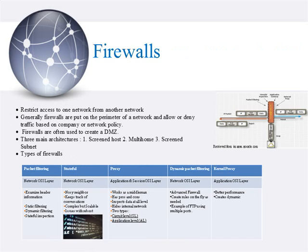Next topic, firewalls. Firewalls are used to restrict access to one network from another — they prevent specific types of information from moving between the outside world and the inside trusted network. There are three main architectures: screened host, multi-home, and screened subnet. There are five types of firewalls: packet filtering, stateful firewall, proxy firewall, dynamic filtering, and kernel proxy.